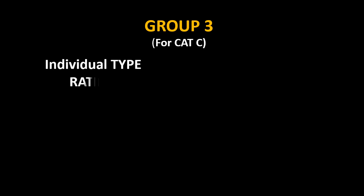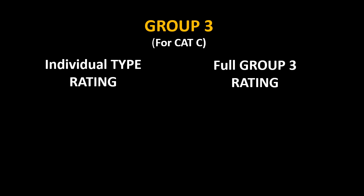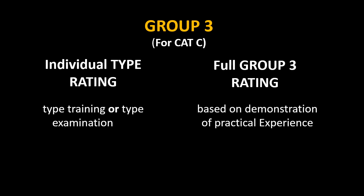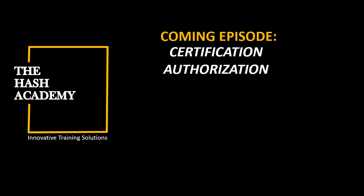If your category is C and the aircraft falls in Group 3, then you can have individual type rating or full Group 3 rating. For individual type rating you only need type training or type examination. Full Group 3 rating will be based on demonstration of practical experience. After endorsing your basic aircraft maintenance engineering license with aircraft type rating, you need to get certification authorization before you can certify the maintenance on aircraft. In our upcoming videos we will learn what certification authorization is and how you can get it.